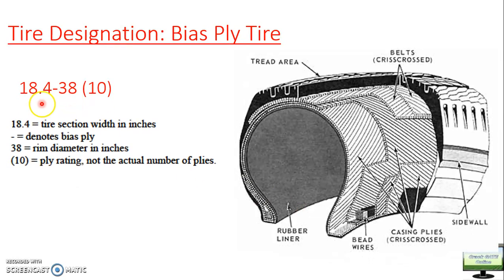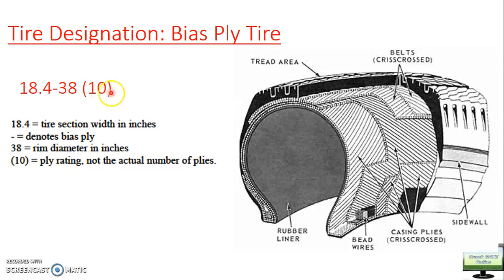The next designation is for bias ply tire, designated for example as 18.4-38. If a dash is present it denotes bias ply; if R is there it denotes radial ply. Here 18.4 again denotes tire section width in inches, the dash denotes bias ply, and 38 denotes rim diameter in inches. The ply rating — for example (10) or (15) — is not the actual number of plies but a rating of how much load it can carry. You can also see the bias ply crisscross construction here.